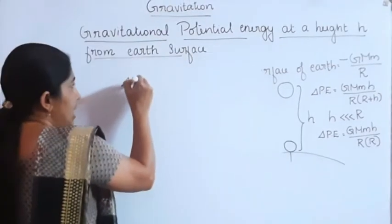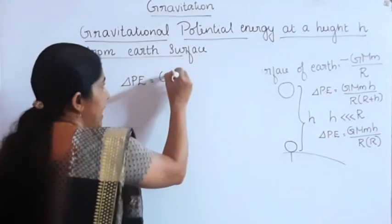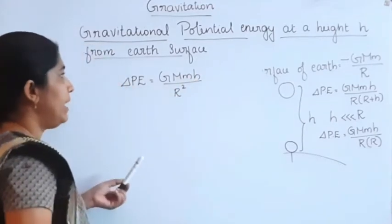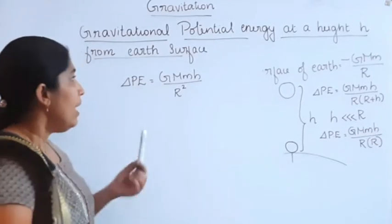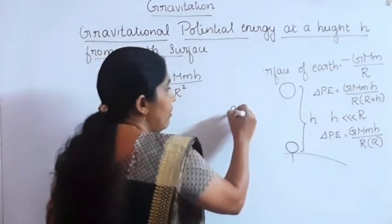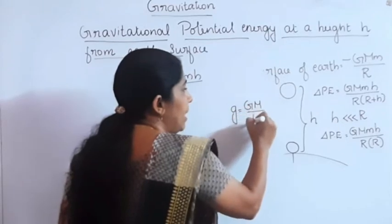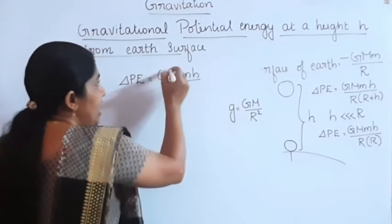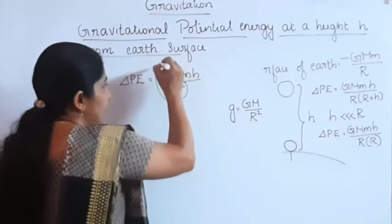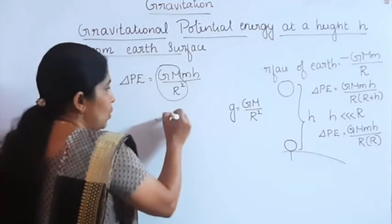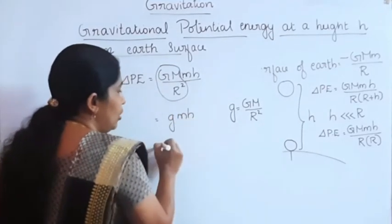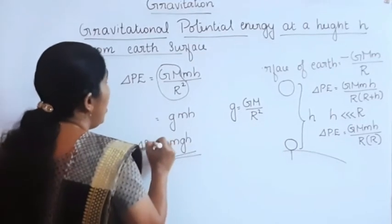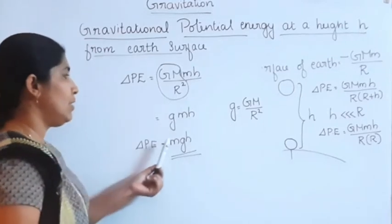So the change in potential energy becomes GMmh divided by R squared. Now we know that the acceleration due to gravity g is equal to GM divided by R squared. Substituting GM by R squared as g, we get change in potential energy equal to g times m times h, which is equal to mgh.